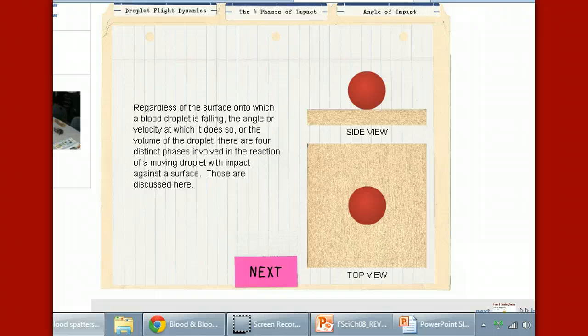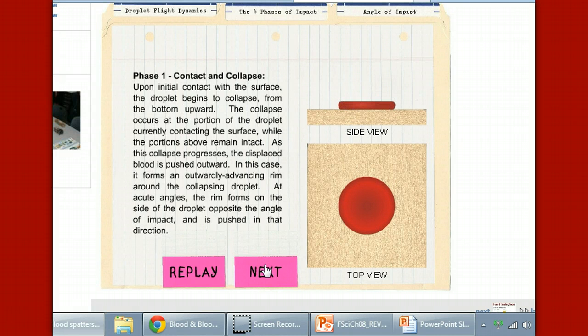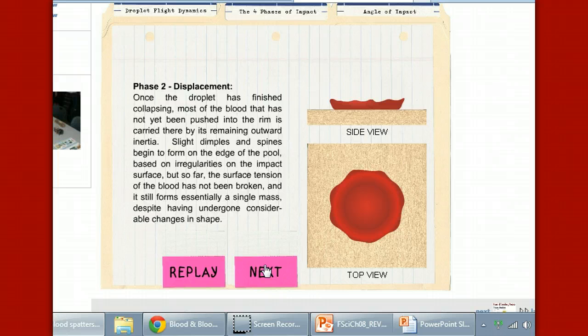You've got a side view of a blood droplet and a top view of the blood droplet. We want to observe the droplet as it falls in order to observe its impact. As it falls down, it goes through what we call phase one, and that's contact and collapse. The force of the surface that it's hitting causes it to expand. Then we see displacement, where the edges of the droplet literally kind of pop back up as a result of that impact.